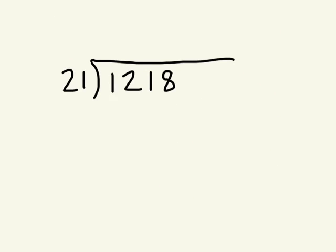Okay, so this is one way of dividing. It's referred to as hangman division. We're looking at 1,218 divided by 21.